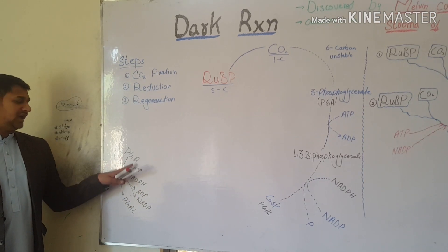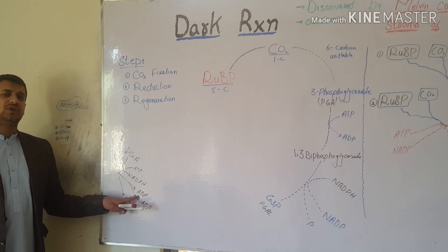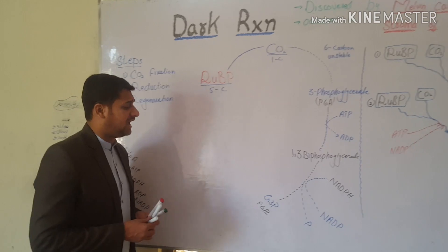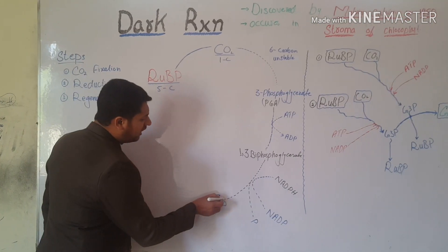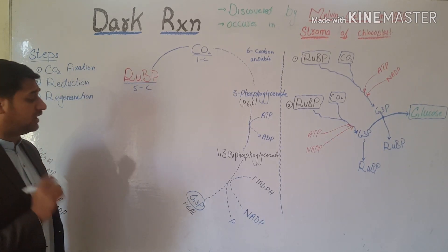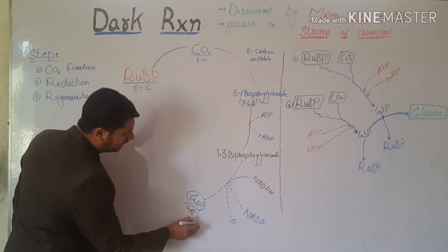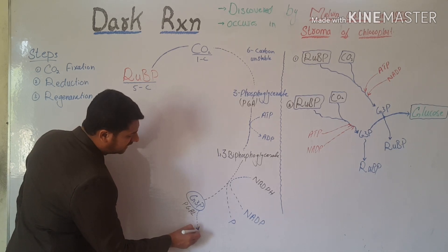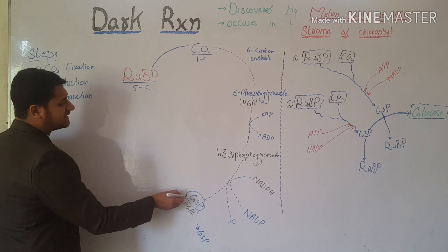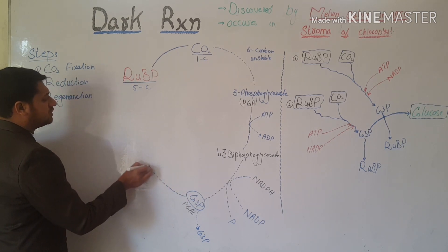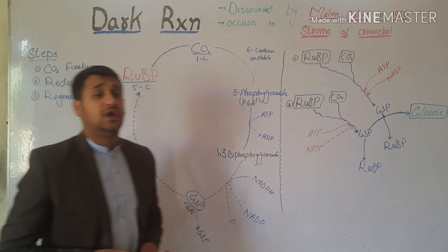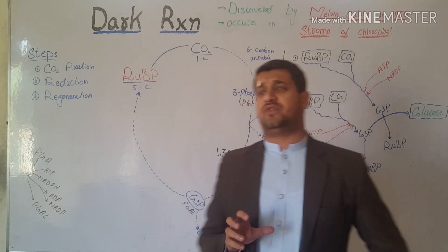When PGA gains a phosphate from ATP and hydrogen from NADPH, it is converted into PGAL. Now, we have 6 G3P molecules. One G3P will be released to eventually make a glucose molecule, while the remaining 5 G3P molecules will be back-converted — that is, regenerated — into ribulose bisphosphate.